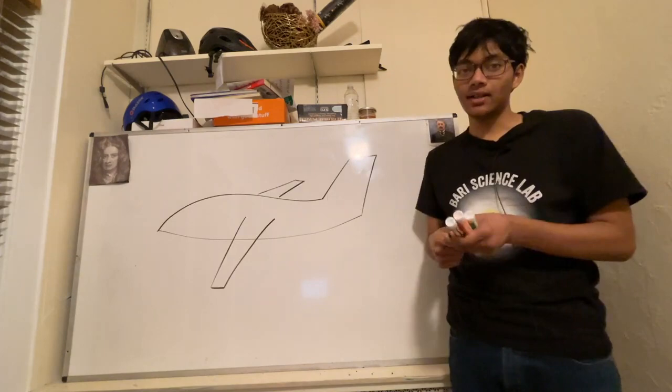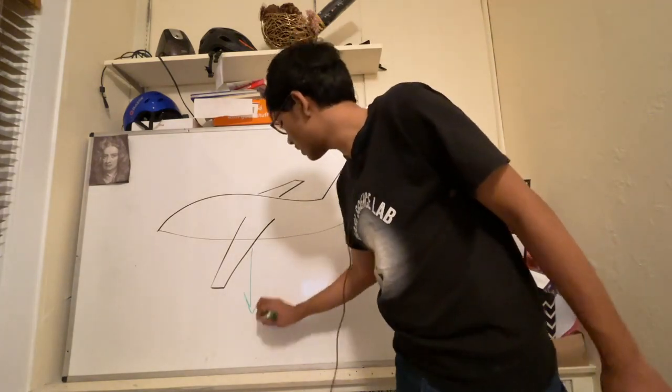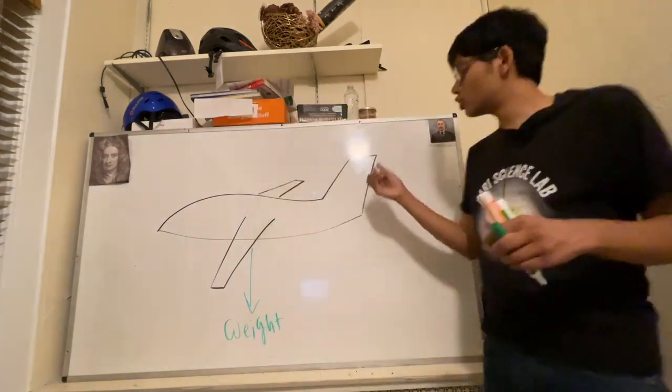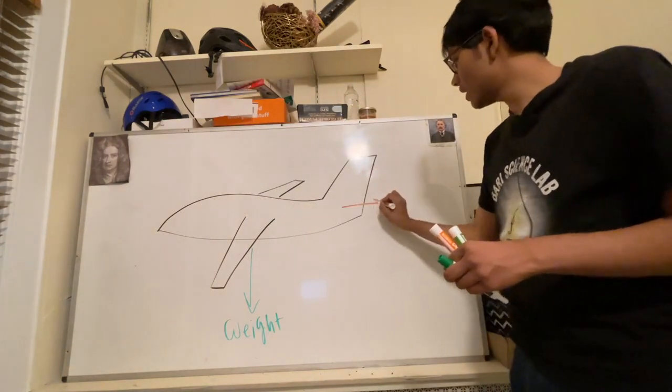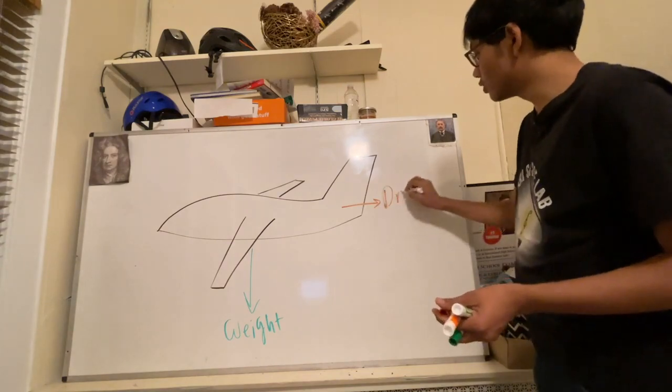A plane's got a couple of forces acting on it. These forces include the force of weight, which comes from gravity and is equal to M times G. There's also the force of drag, which is due to air resistance or wind against the plane.